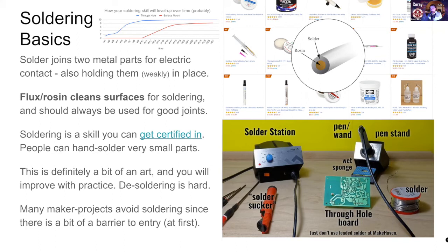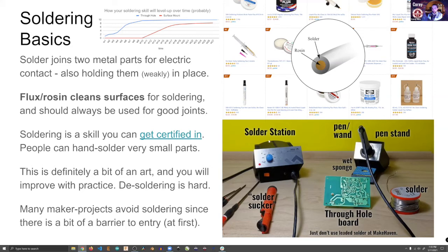Hand soldering is probably going away as we get better at automating the process, but there will always be people building prototypes by hand. If you're going to solder at MakeHaven, there's no badge for the soldering stations — there are three soldering irons in that corner. It's really good to know the names of your tools: the solder station is the power supply at the bottom, there's a soldering pen or wand, a pen stand, and a brass sponge to scrape off the end of the soldering iron. The solder looks like a wire but is really bendy.